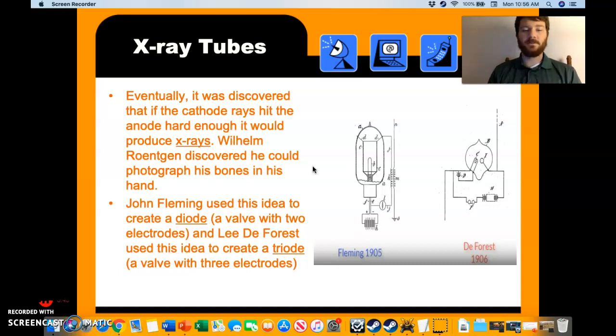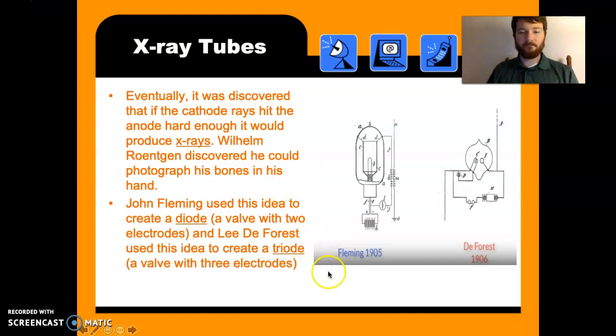And how to contain them and use them in a device. A diode uses two electrodes, an anode and a cathode. A triode uses three electrodes, an anode and two cathodes, or two cathodes and an anode. And that's where we get a lot of our devices that we have today.